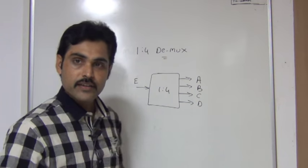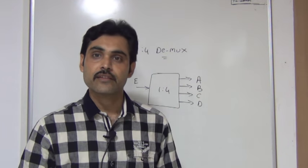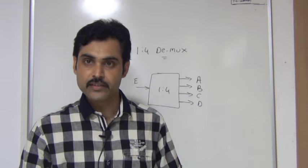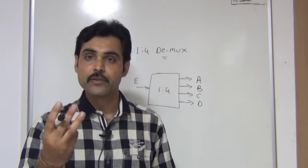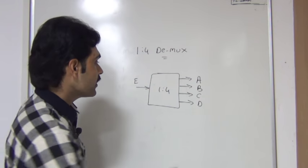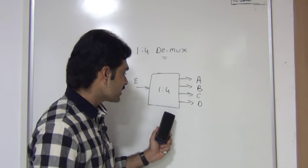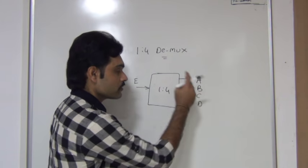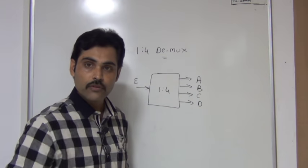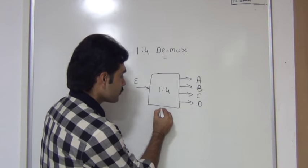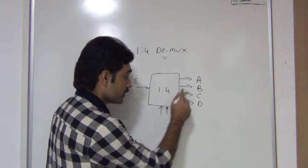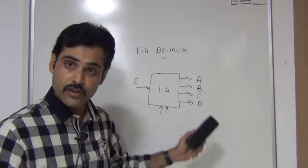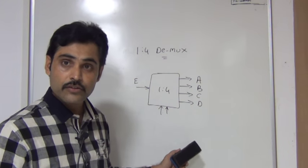In the multiplexer case, if 4 inputs are there, 2 selection lines are taken. If inputs are 8, selection lines will be 3. Similarly, in the demultiplexer, selection lines depend on the output. Here, 4 outputs are there, so I will take 2 selection lines.